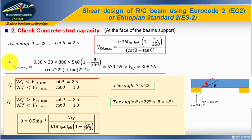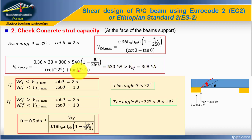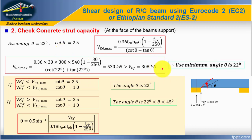Looking at our VRd,max result of 530 kN, which exceeds the design shear force, we must use the minimum angle theta = 22 degrees for this beam.